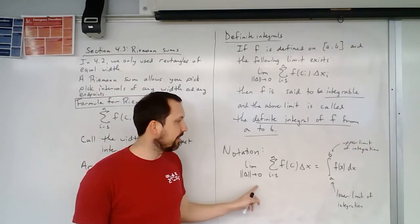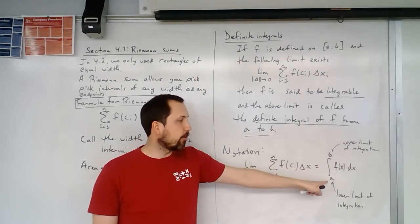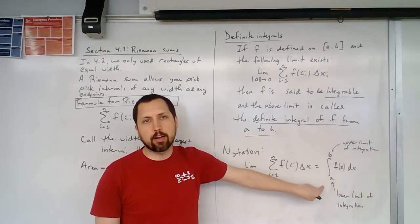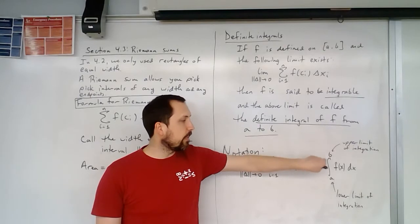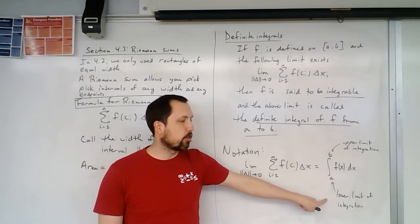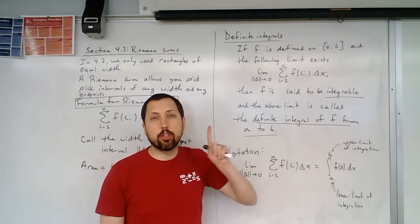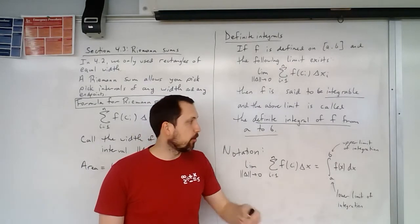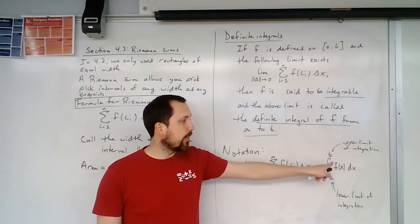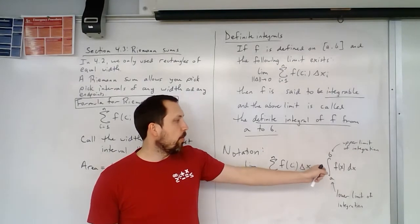So this notation is that this limit, as long as this is finite and exists, we're going to write it like this. This integral of F of X DX. But notice there's numbers on the top and the bottom. So these numbers, A and B, are going to be numbers that we're going to plug in. This top one's called the upper limit of integration. The bottom number is called the lower limit of integration. So this notation should look similar, except remember, with the indefinite integrals, there were no numbers. We only had this integral sign with the function with the DX, the derivative with respect to X.